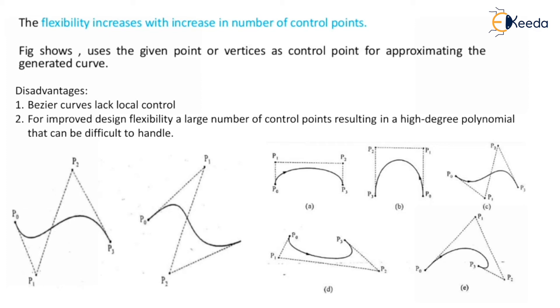For example, if we consider a figure, in that you observe P0 and P1 will cover only half part of the curve while P2 and P3 will cover another half part.